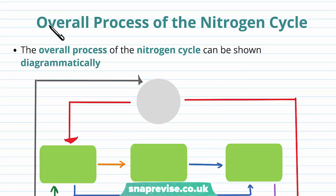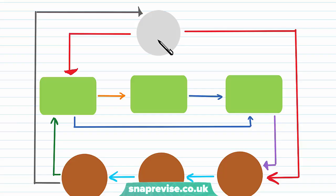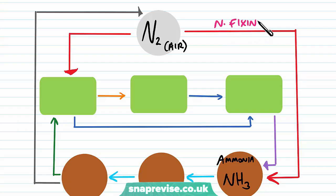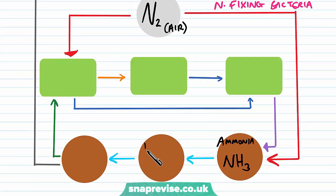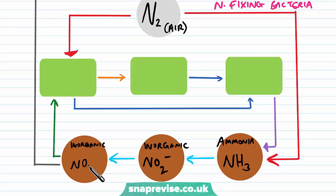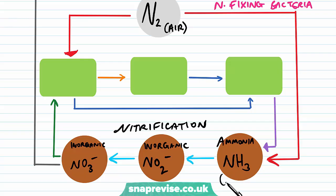Now we're going to look at an overall process of the nitrogen cycle to show where all of these different steps come in, and we can represent the cycle diagrammatically. The best place to begin is where we have nitrogen in the air that exists as N2. The nitrogen in the air can be turned or fixed into NH3, which is inorganic ammonia, and this is carried out by nitrogen-fixing bacteria. This ammonia can then be turned into inorganic nitrite, NO2-, and this can be turned into inorganic nitrate, NO3-. This process is nitrification. Remember, these ammonia compounds can be incorporated into ammonium compounds containing NH4+ as well. The nitrates in the soil can be taken up by plants and turned into organic molecules like proteins and nucleic acids — so here we have organic nitrogen in plants.